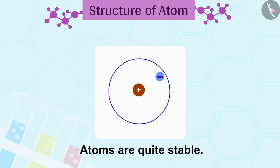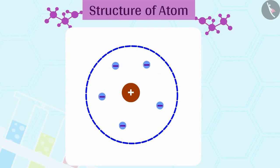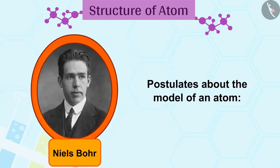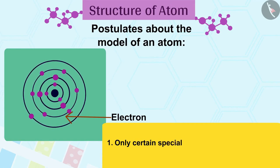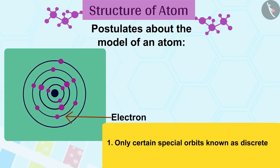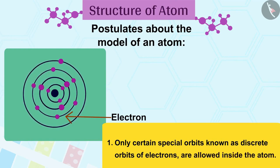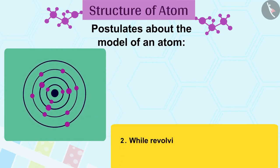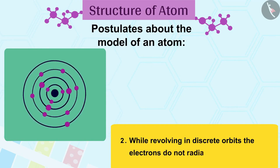We know that atoms are quite stable. In order to overcome the objections raised against Rutherford's model of the atom, Niels Bohr put forward the following postulates about the model of an atom. 1. Only certain special orbits known as discrete orbits of electrons are allowed inside the atom. 2. While revolving in discrete orbits, the electrons do not radiate energy.